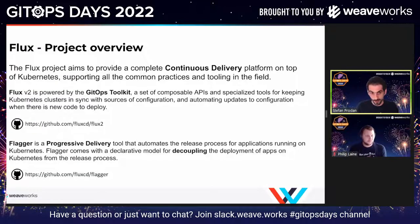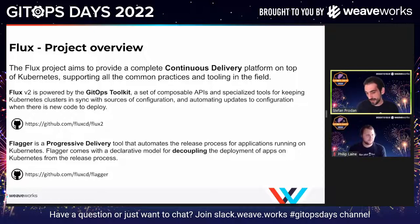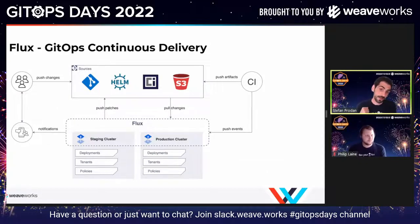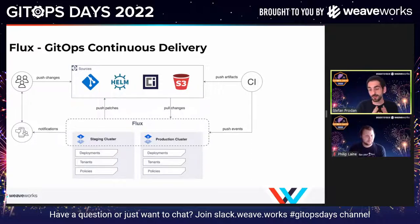The main repository is fluxcd/flux2 — please open your browser and star it. A second project we maintain inside the Flux organization is Flagger. Flagger decouples the deployment of an application from the release process: if Flux does the deployment, Flagger does the release. It looks at metrics and routes traffic from one version to another, determining if the new version behaves okay under your self-defined service level objectives. In its new version, Flux can span across multiple clusters.